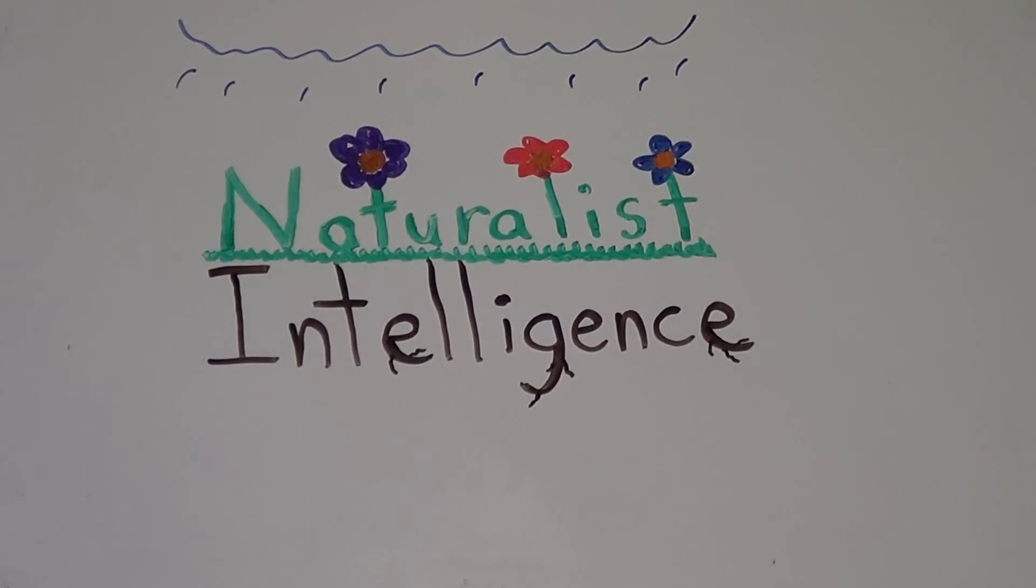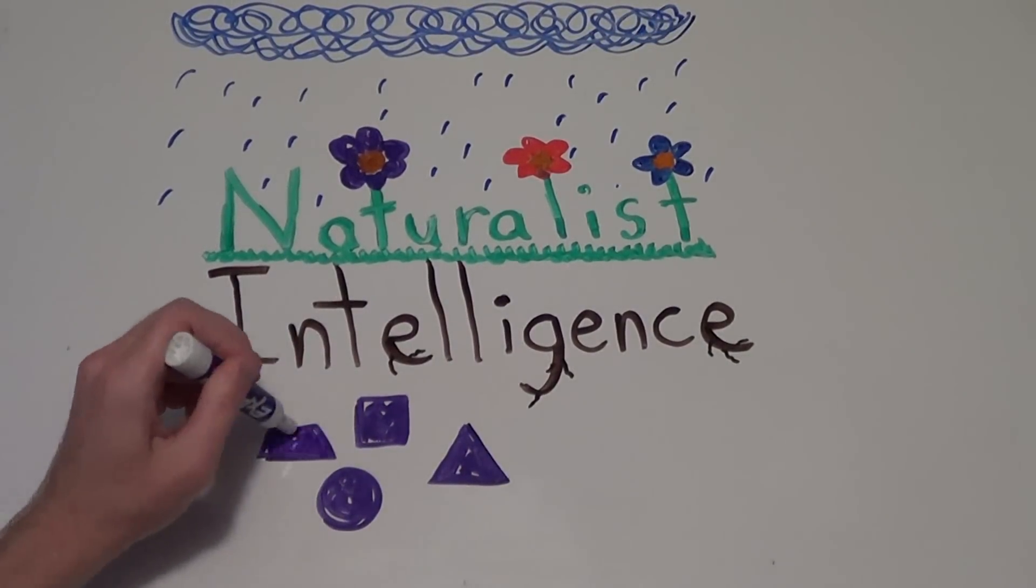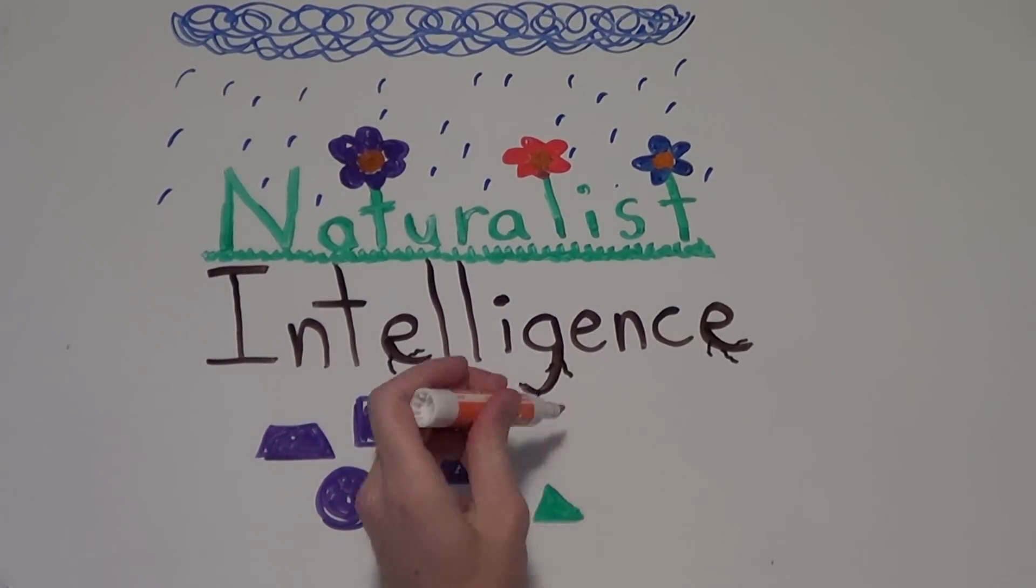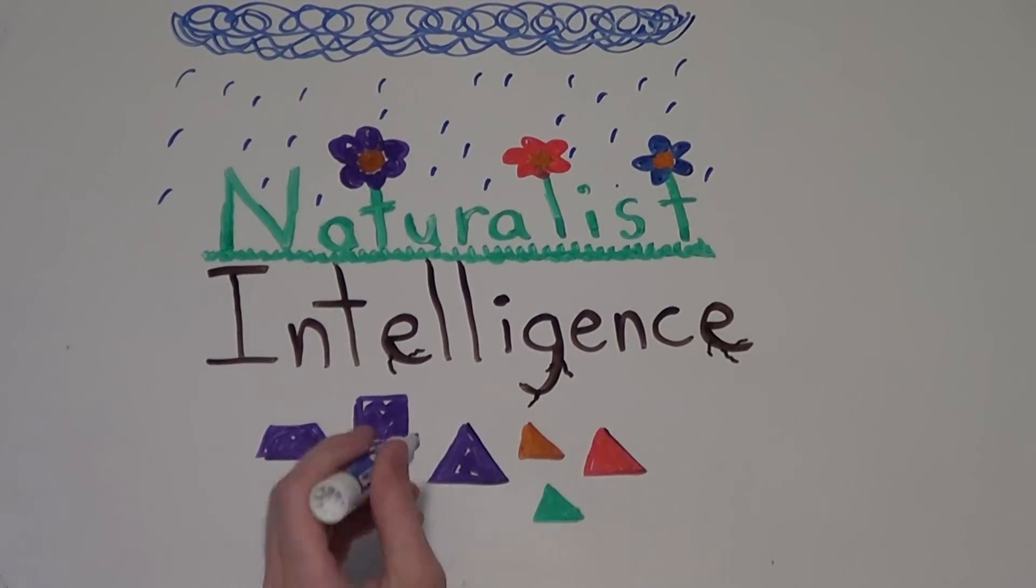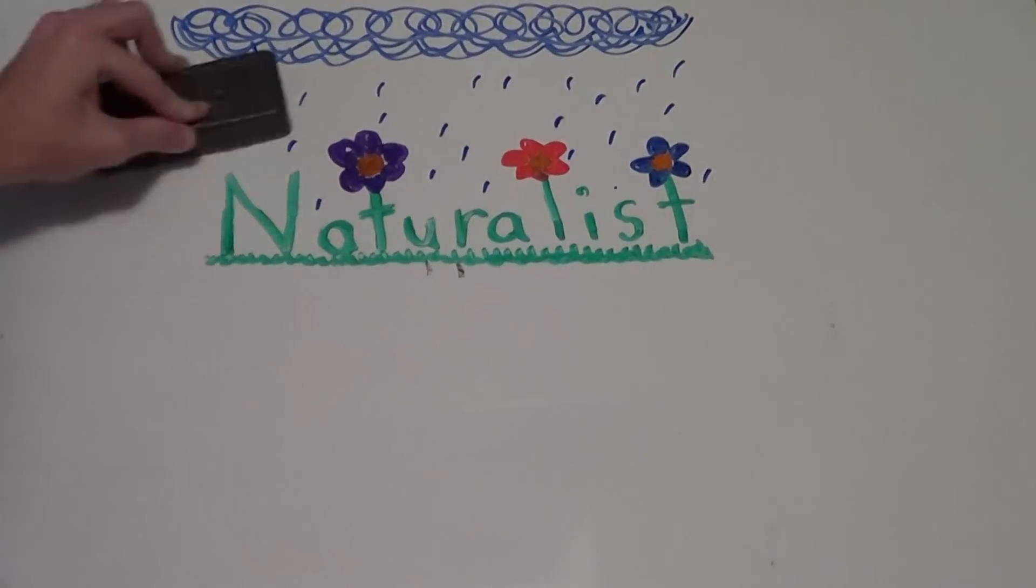Naturalist intelligence designates the human ability to discriminate among living things, as well as sensitivity to other features of the natural world. Nature-smart people like Charles Darwin and Jane Goodall serve as botanists, chefs, and farmers, because they can easily categorize things in their environment.